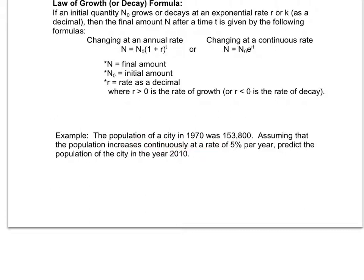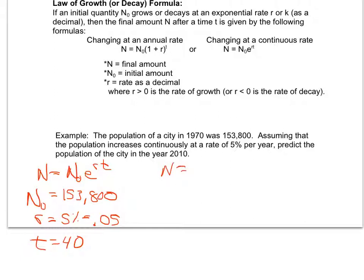Since it's increasing at a continuous rate, I'm going to choose to use my formula. So I'm going to let n equals n sub zero times e to the rt. So my initial amount, n sub zero, is 153,800. It tells me that my rate is 5%, so r is 5%, which is 0.05. And in 2010, so from 1970 to 2010, 40 years have gone by, so I'm going to let t equal 40. And I'm going to go ahead and say that my new amount in 2010 is equal to 153,800 times e to the 0.05 times 40.